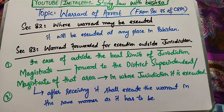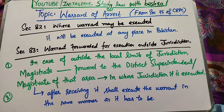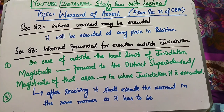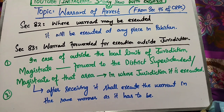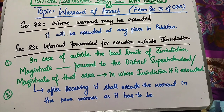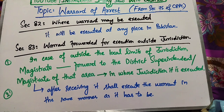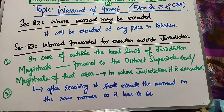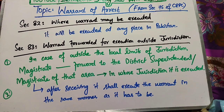Section 82 deal کرتا ہے Where warrant may be executed. جب آپ کو کوئی warrant of arrest issue کیا جاتا ہے تو that warrant may be executed at any place in Pakistan — یعنی پاکستان کے کسی بھی حصے میں آپ اس warrant کو execute کر کے بندے کو arrest کر سکتے ہیں.